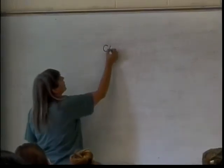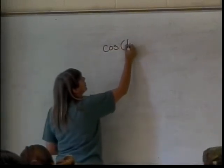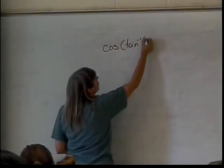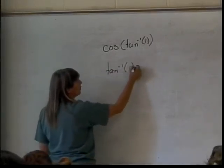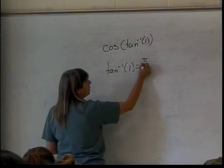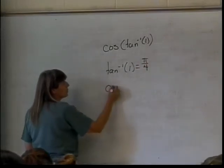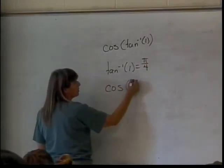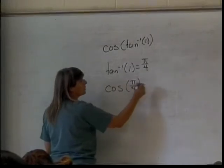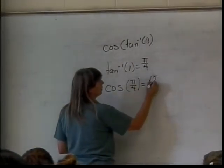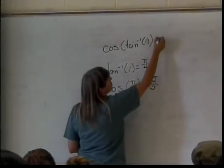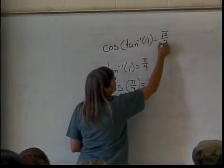So we're looking at the cosine, bless you, of the tangent inverse of 1. So we'll start with the tangent inverse of 1, which all of you just told me, or most of you did, is pi over 4. So to finish my problem, I need to calculate the cosine of pi over 4. And that's going to be what? Square root of 2 over 2. So this would be the square root of 2 over 2.